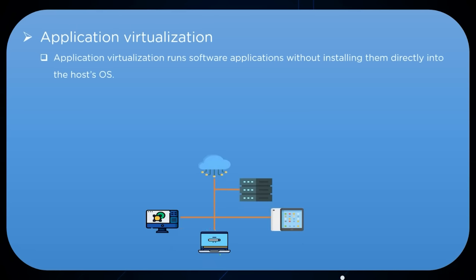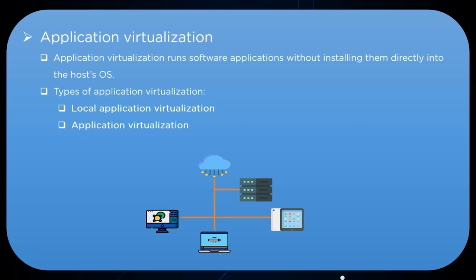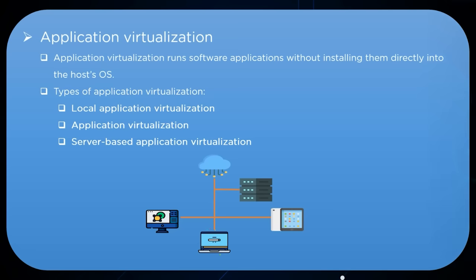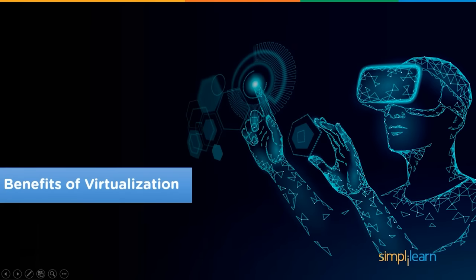The last type is application virtualization, where applications run directly without needing to be installed on the system, as they run in a virtual environment. There are three subtypes: local application virtualization, where the application runs on the host device but in a different virtual environment; application streaming, where the application resides on the server and sends components to the host device as needed; and server-based application virtualization, where the application runs entirely on the server side and sends only the interface to the client system.